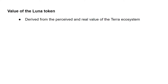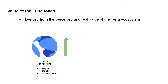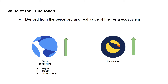The value of LUNA is proportional to the value people see in the Terra ecosystem. The more useful dApps there are on Terra, the more transaction volume there is, the more people stake LUNA, and the more money flows into the ecosystem — all pushing LUNA's price up. But there are also market forces that affect LUNA's price: people trying to manipulate the price, borrowing and lending liquidations, and general crypto market sentiment that causes money to flow in or out of the Terra ecosystem.